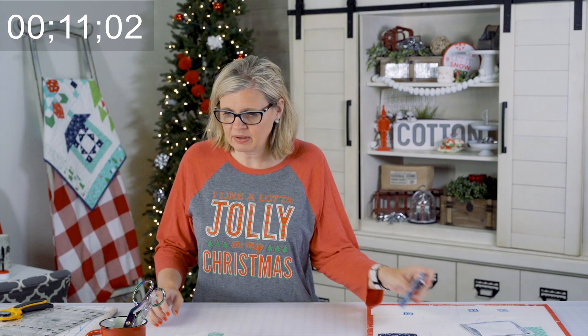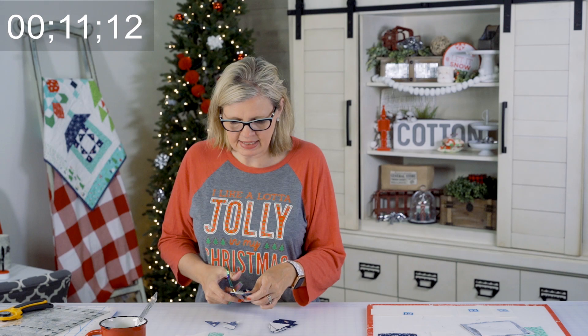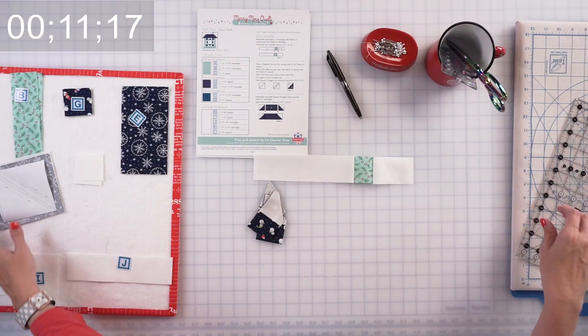Now I'm going to cut a quarter inch away from the flying geese. I'm gonna trim my solid lines on my half square triangle, press, and then go back to the sewing machine.